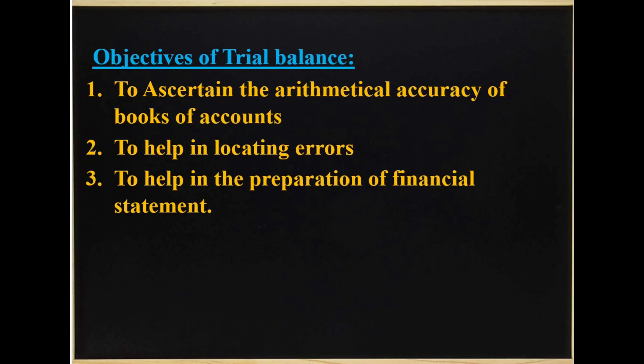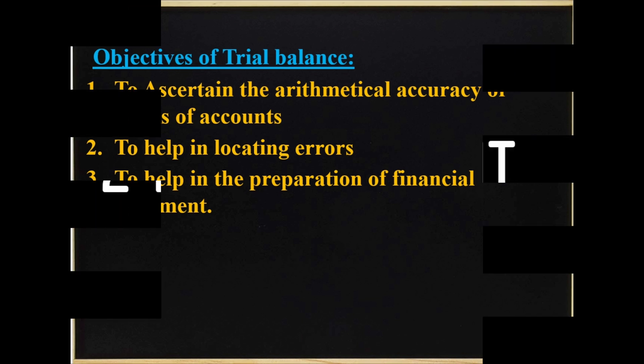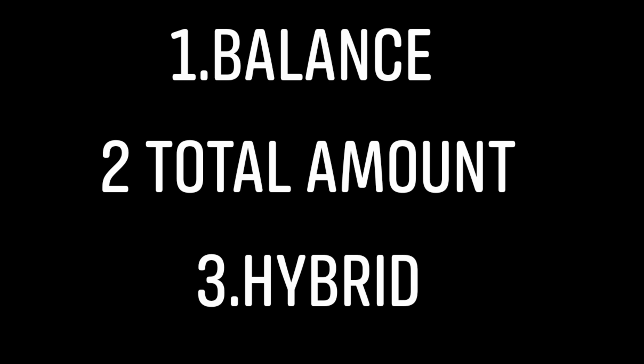Fifth, it helps to ascertain the arithmetical accuracy of books of accounts. Now the objectives of trial balance — this is a very important topic for examination. There are mainly three objectives: first, to ascertain the arithmetical accuracy of books of accounts; second, to help in locating errors; and third, to help in the preparation of financial statements.